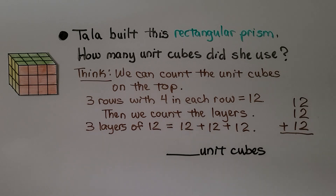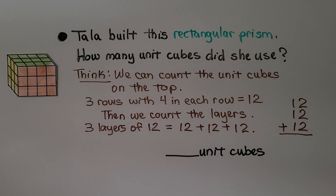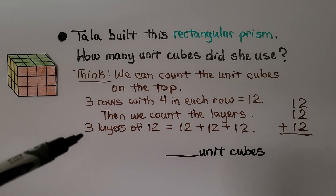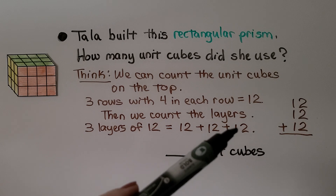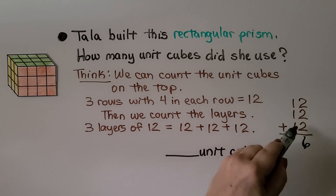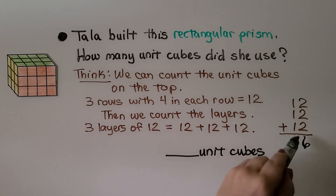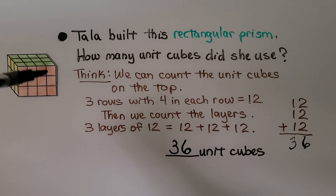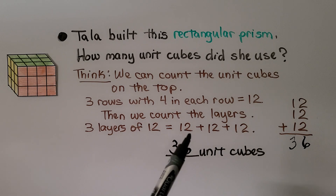Tala built this rectangular prism. How many unit cubes did she use? We count the unit cubes on the top — three rows with four in each row, so that's twelve. Then we count the layers: one, two, three. We have three layers of twelve. That's twelve plus twelve plus twelve. Two plus two plus two is six, and ten plus ten plus ten is thirty, so there are thirty-six unit cubes total.